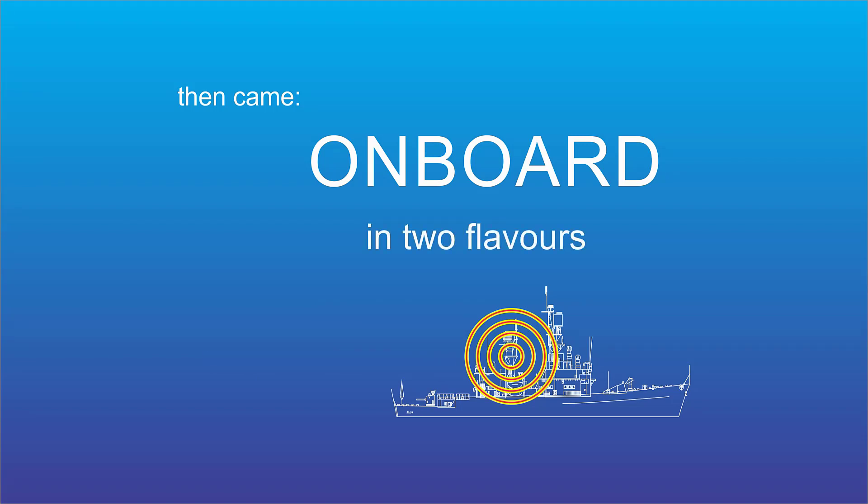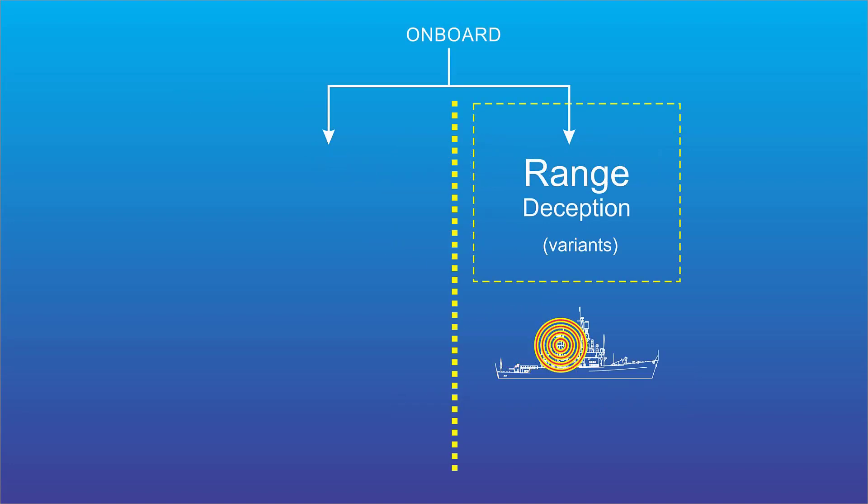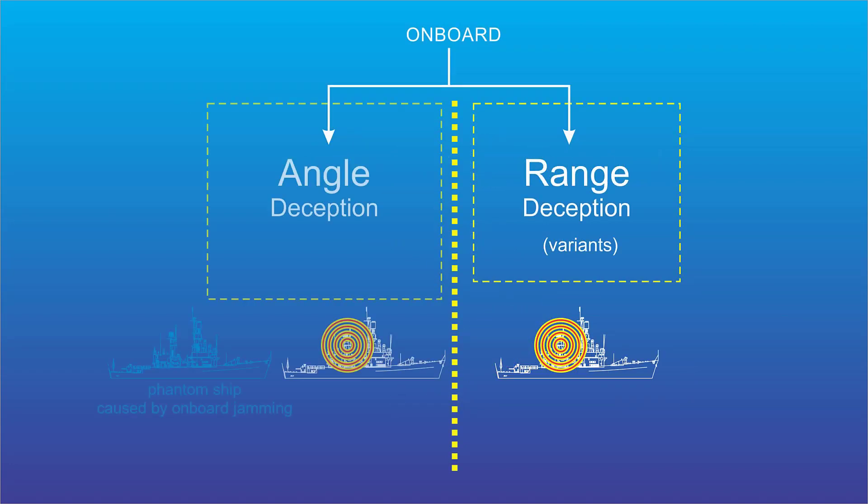Onboard jamming comes in two flavors. Range deception, in various forms, and angle deception, which loosely speaking comes in three forms. Amplitude modulation, which is abbreviated AM, cross-pole or cross-polarization jamming, and something called cross-eye jamming.